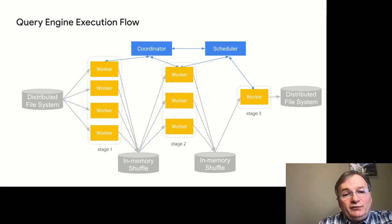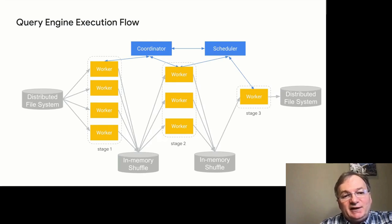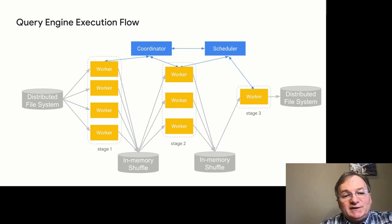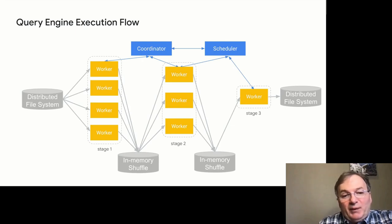This slide illustrates various components involved in query processing and shows how stages interact with each other. Each stage reads data from either a distributed file system or from a distributed component called shuffle. All work for a given query is coordinated using a coordinator. There is also a scheduler component that assigns tasks to workers. Stage one reads data from the distributed file system, processes it, and puts intermediate results into shuffle. Stage two reads from shuffle, processes it again, and puts partial intermediate results back into shuffle.